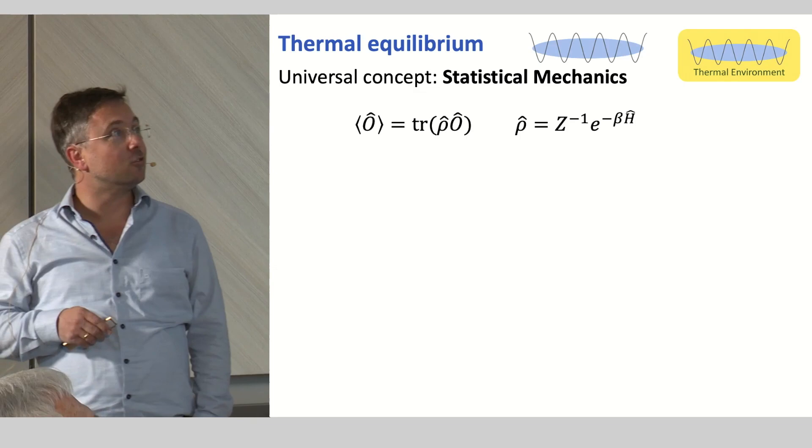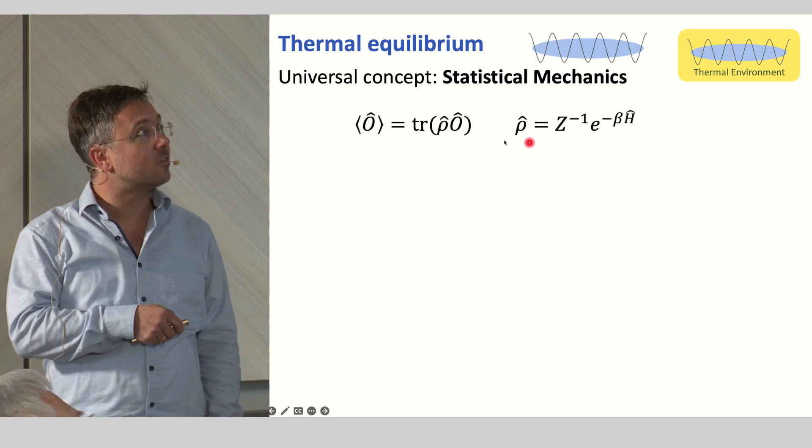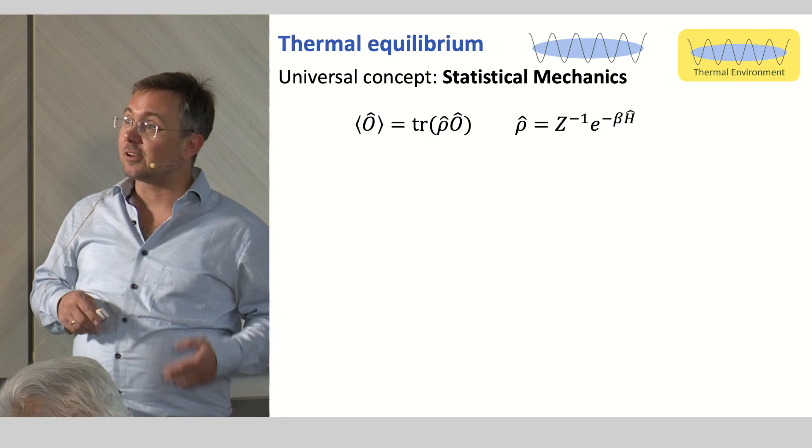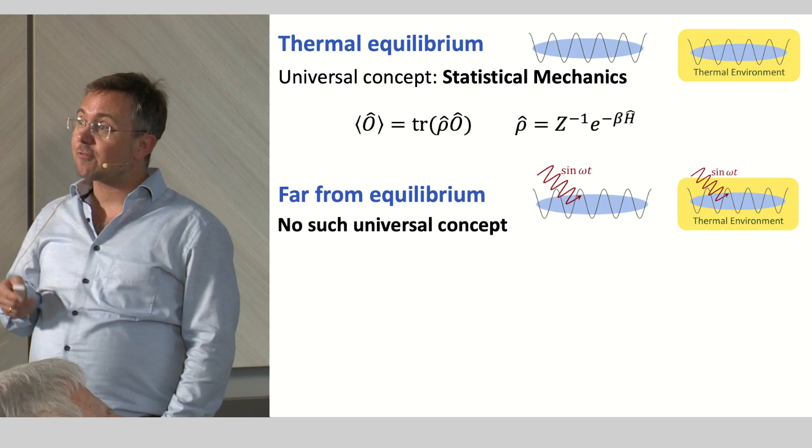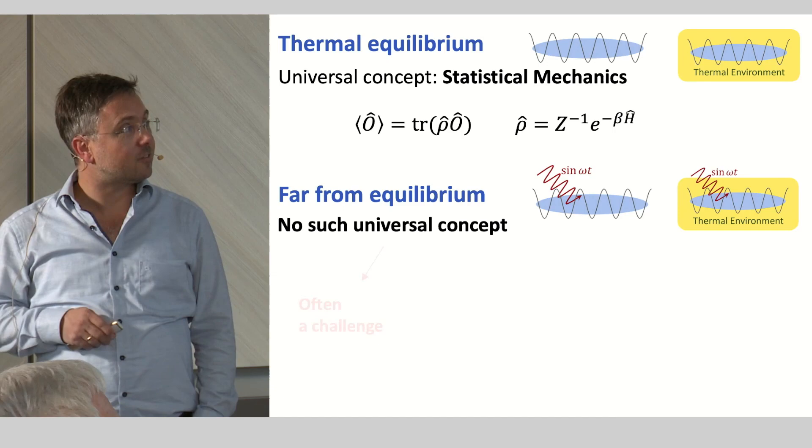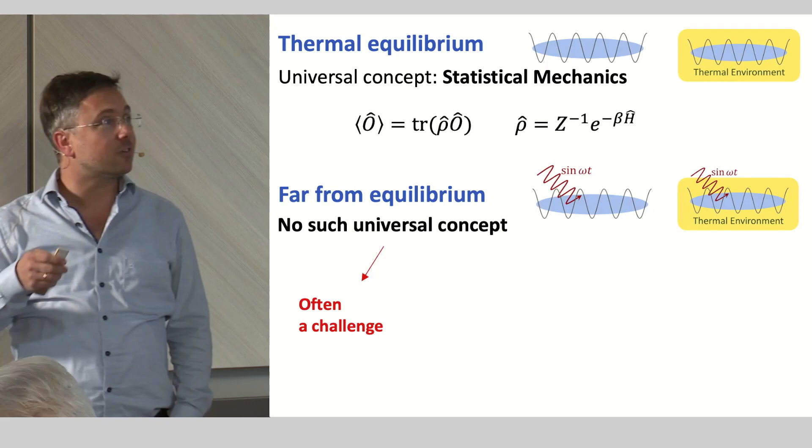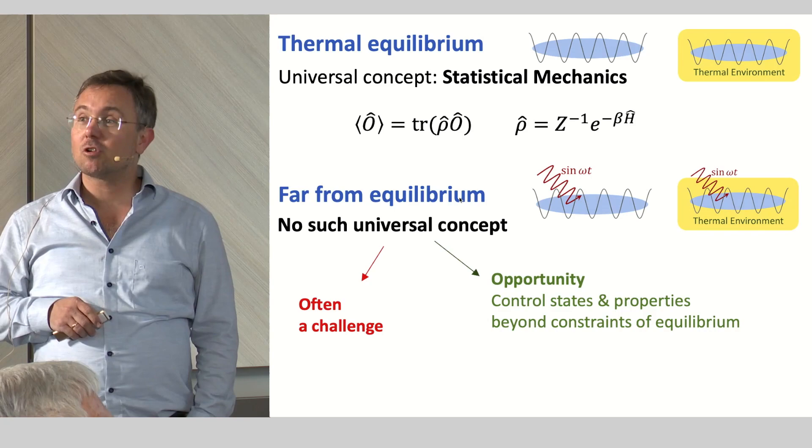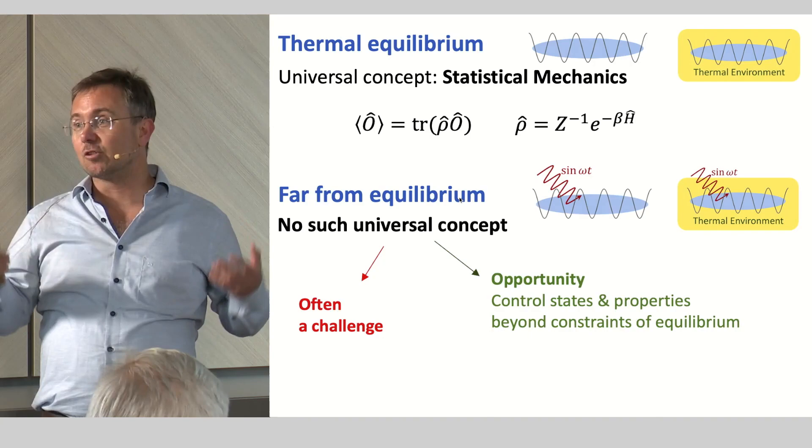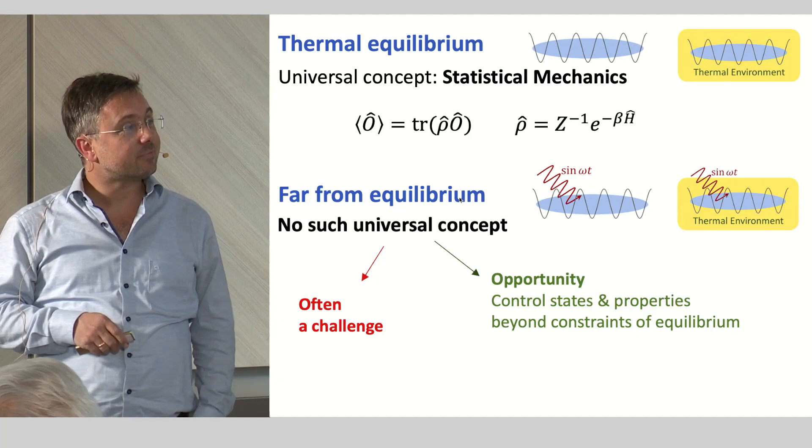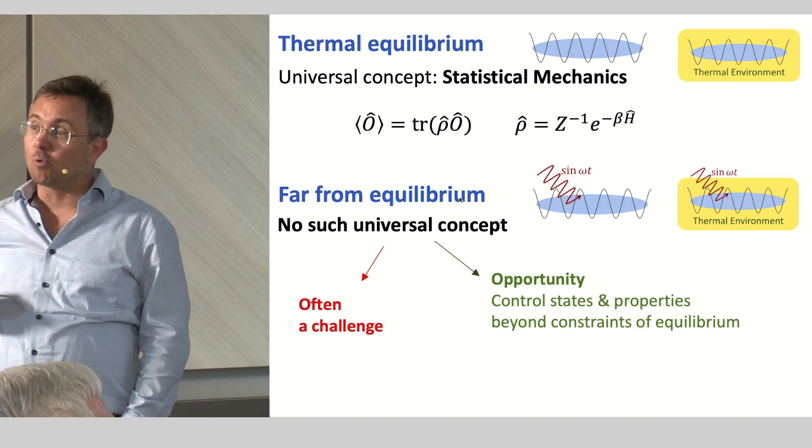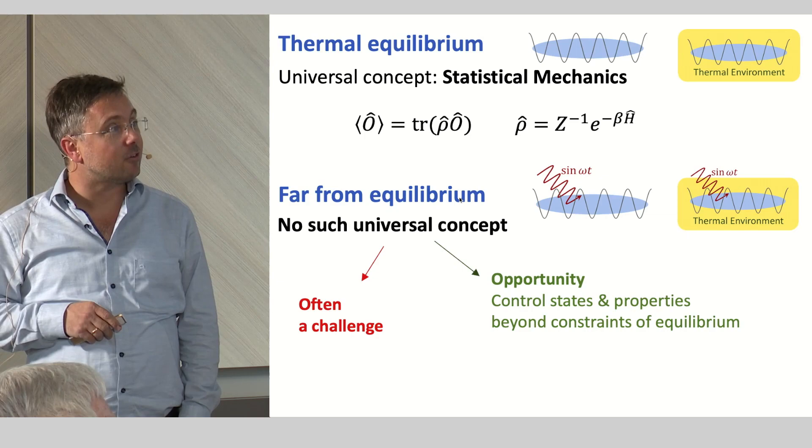Let me give a very general motivation for doing something like this. If you're in equilibrium, you can use statistical mechanics and compute expectation values and properties of a system. This can still be very difficult, but at least it's a very generic concept. If you drive your system away from equilibrium, you do not have this concept anymore. But it is also an opportunity to control the system beyond the strict constraints of thermal equilibrium where your state is just determined by the temperature or chemical potential of the bath. You might achieve interesting properties you wouldn't be able to get in equilibrium.